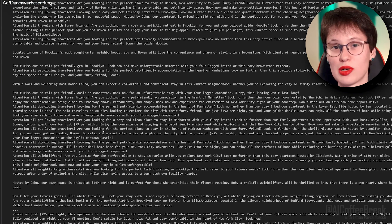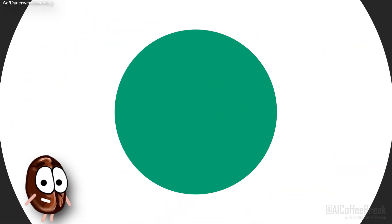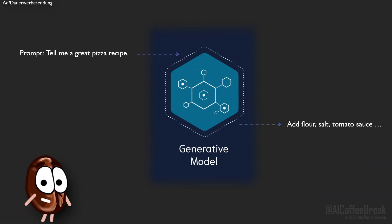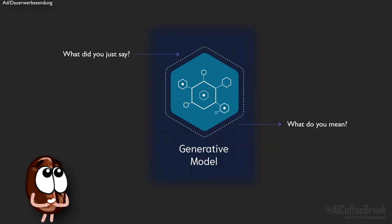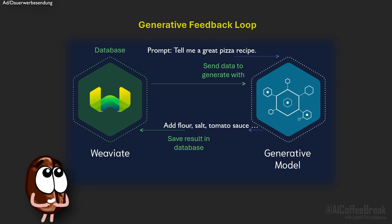Now we have a working example of creating a description of a listing, generating ads for these listings, and finally writing personalized ads for users with generative feedback loops. It is a very general paradigm that enables AI models to have states. The problem with current LLMs is that they get the prompt, generate an output, and then forget everything. But with generative feedback loops, we can store the outputs and use them as inputs for the next prompt — this way we can create stateful AI models.